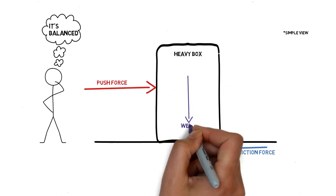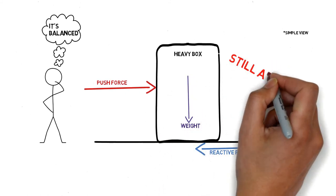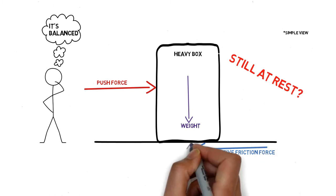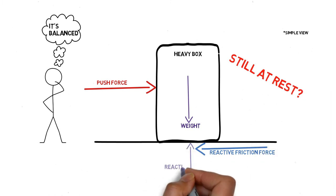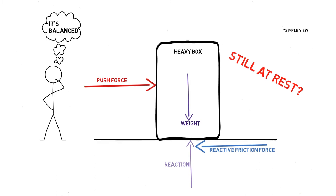Similarly, we can also explain why the same crate would stay in the same position and not move downwards even when the gravitational pull is exerting a force on the crate in a downward direction.